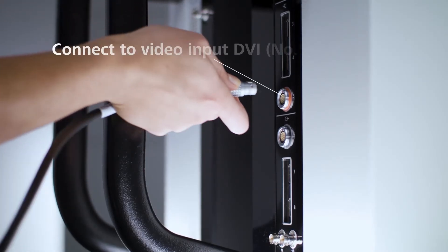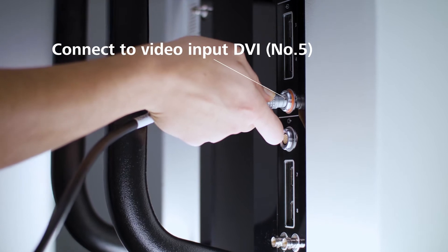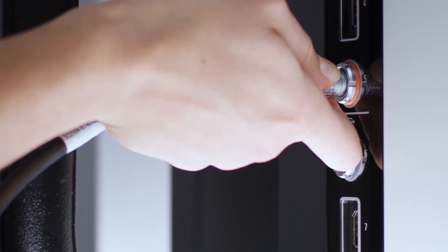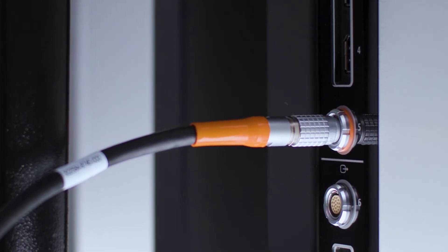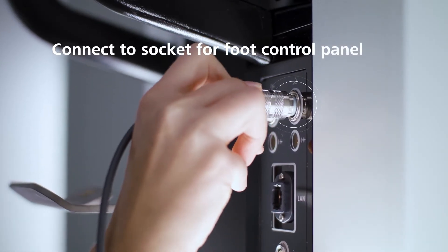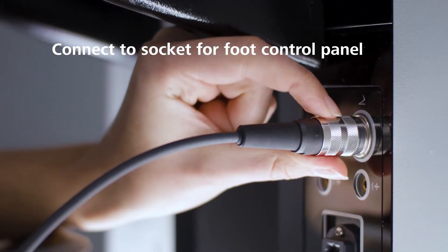Now plug the video cable into the DVI-Video input connection socket seated on the connection panel of the Zeiss Knievo 900. Plug the trigger cable into the connection socket for the foot control panel.